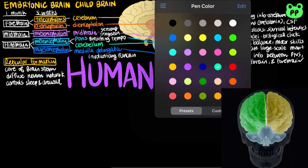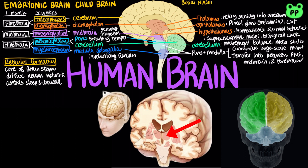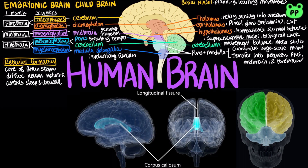The cerebrum has right and left cerebral hemispheres. Each cerebral hemisphere consists of a cerebral cortex overlying white matter and basal nuclei. The basal nuclei are important centers for planning and learning movement sequences. In humans, the cerebral cortex is the largest and most complex part of the brain. A thick band of axons called the corpus callosum provides communication between the right and left cerebral cortices.